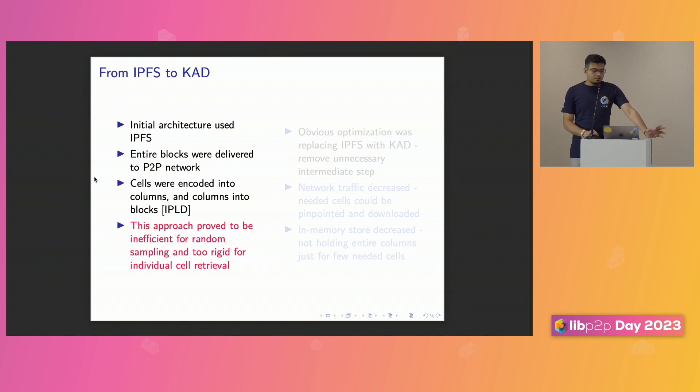So when we started off around 2020 and 2021, we had a basic POC. Late 2021, we started with the peer-to-peer implementation. We initially started with IPFS because it works best with high-level abstractions. The entirety of the blocks were delivered through the peer-to-peer network. The cells were encoded as part of the columns, and the columns were encoded as part of the blocks. That's the IPLD format that we used. But this approach seemed to be not working for us because it was inefficient in terms of the random sampling that we wanted to do for retrieval.